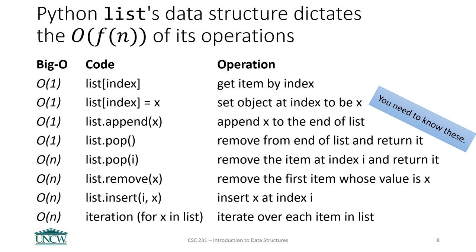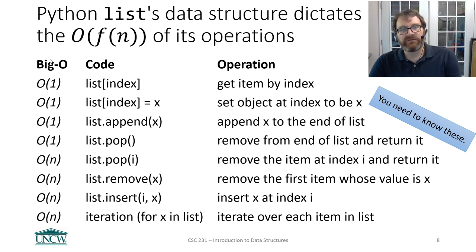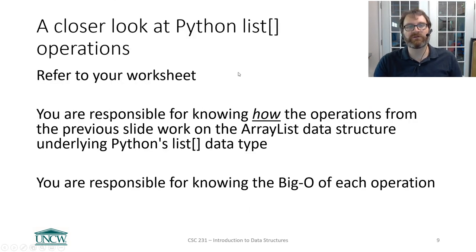There are a lot of list operations in Python and they have different Big O's depending on which one we are using. We're going to switch over to our worksheet and we're going to explain why these list operations are the Big O that they say they are. You are responsible for knowing what each one of these list operations does, and you need to know their Big O. Because we are going to use this list to solve some common problems in computing. What we're going to do is switch over to our worksheet and talk through why these things are what they are.